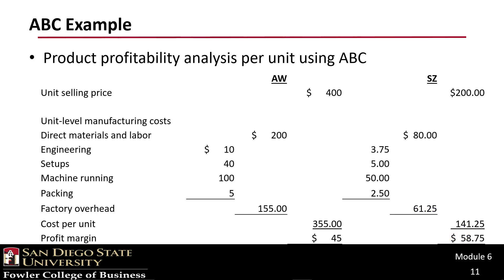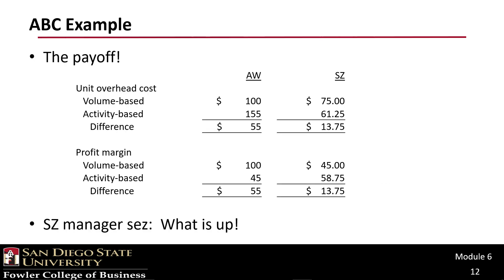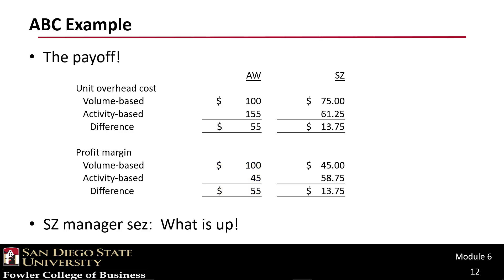Why do we do all this? The payoff comes when we compare activity-based costing to volume-based overhead. Volume-based overhead for AW was $100 but activity-based is $155. For SZ, it was $75 under volume versus $61.25 under ABC. These differences in overhead allocation matter — in theory, activity-based costing gives a more accurate depiction, which is why firms shift to this system. The AW manager won't be happy, but the SZ manager sees profit margins up by $13.75 per unit.